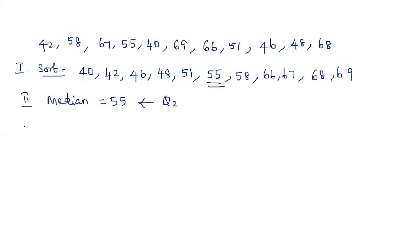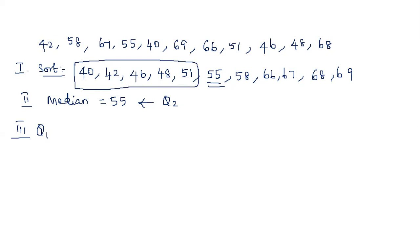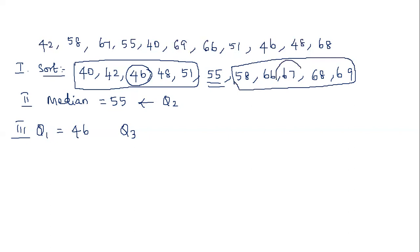The third step is to find Q1. Since it is an odd number of samples, we leave the median and take the lower range of data samples. Finding the median of that lower half gives us 46, so Q1 is 46. To find Q3, we leave the median and take the upper range. The median of that upper half is 67, so Q3 is 67.